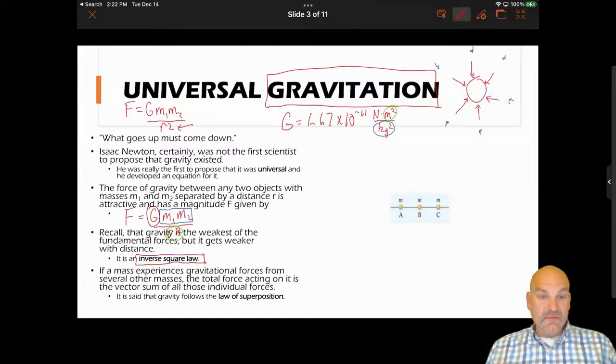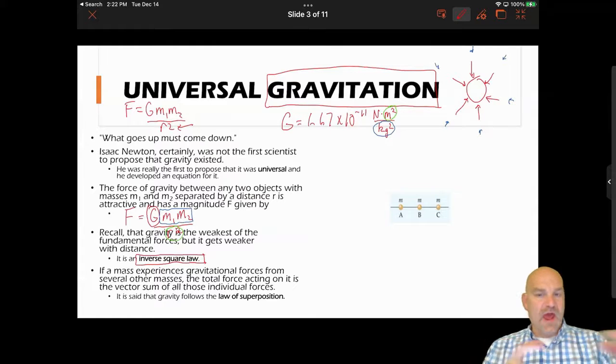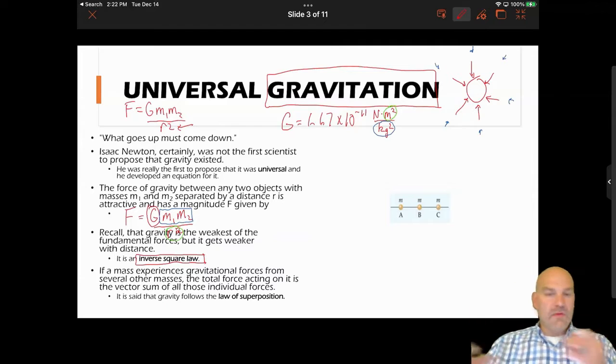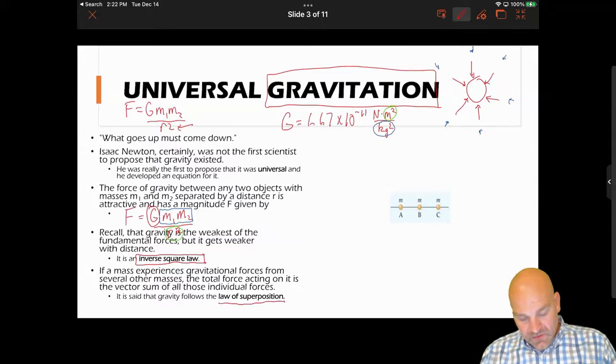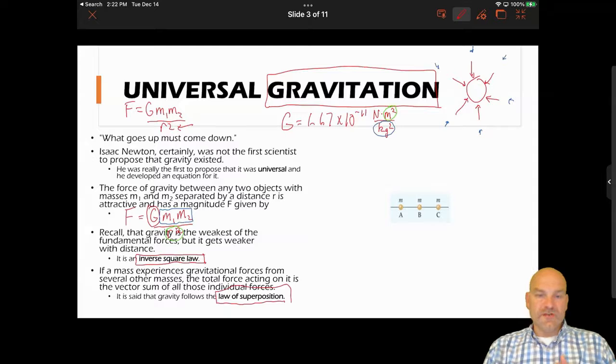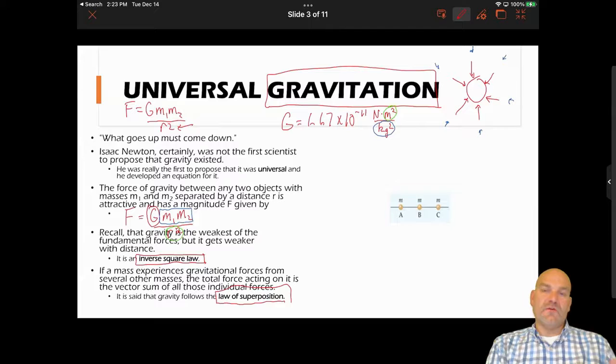If a mass experiences gravitational forces, it's going to experience gravitational forces from everywhere. It's going to try to be pulled towards everything, and the law follows what's called the law of superposition. What does that mean? That means some objects will experience greater forces based on what's acting around them. It's kind of one of the reasons why the universe is the way it is.